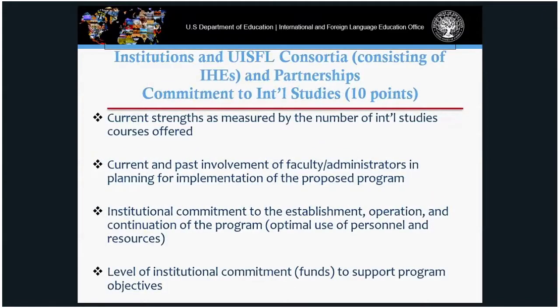For institutions and consortia applying to the UISFL program, you will address commitment to international studies, worth 10 points. Describe your current strengths, the types and numbers of international programs you currently offer, the extent to which administrators and faculty have been involved in planning to improve your international footprint, and whether you are making optimal use of your matching funds.